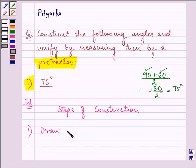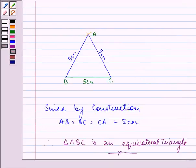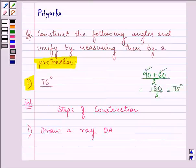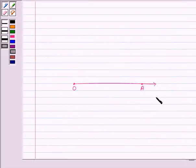First of all, we need to draw a ray OA. This is the ray that we need to draw. Now, on this ray OA,